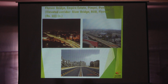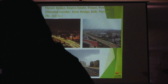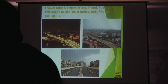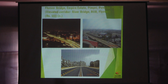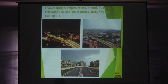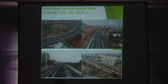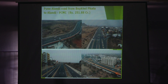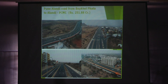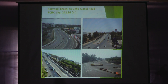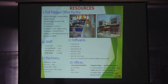Here in PCMC, it is 3 plus 3, that is 6 lanes, constructed using segmental construction. This crosses a river, then the Pune-Mumbai railway line, and the Pune-Mumbai old national highway. This is the recently constructed Pune to Alandi road — 61 meters wide. This is Kalewadi Phata to Dehu-Alandi road — 45 meters wide.